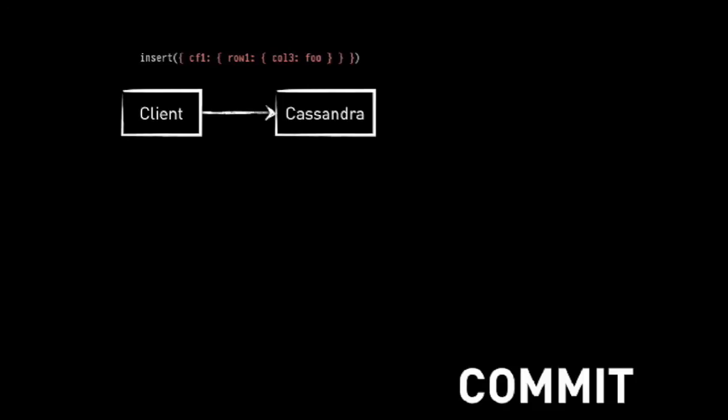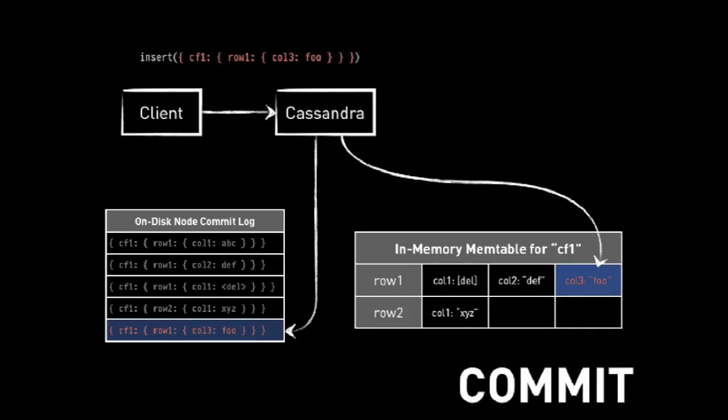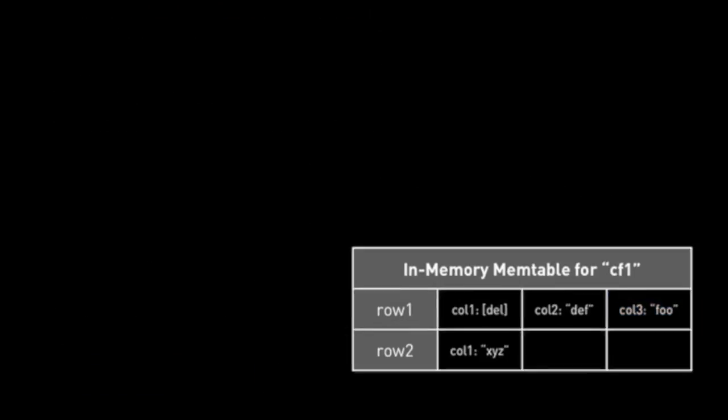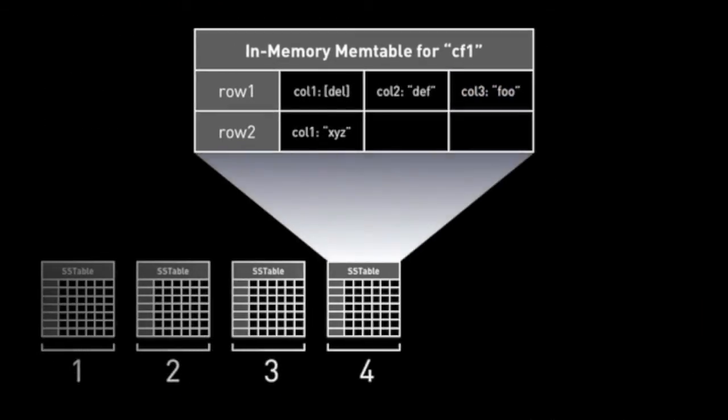When we write to Cassandra, we send a little insert — just a simple insert — and Cassandra writes this to an on-disk commit log as well as in memory in this thing called a memtable. This happens in sequence, and the memtable is a materialized representation of what's in the commit log. Then we do this thing called a flush, where we take the data in the memtable and flush it to disk as it is in memory, in sorted order.